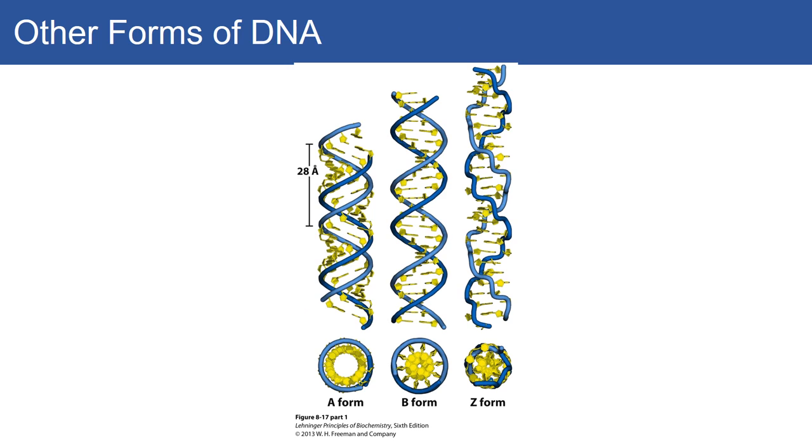There are other forms: the A form and the Z form. The A form you will find when it's very dehydrated. The Z form is found in some very unique organisms that are not very prevalent. The major form you're going to find is B-DNA—it's the most characterized and most important. You will see DNA in the A form when it's in a dehydrated state.